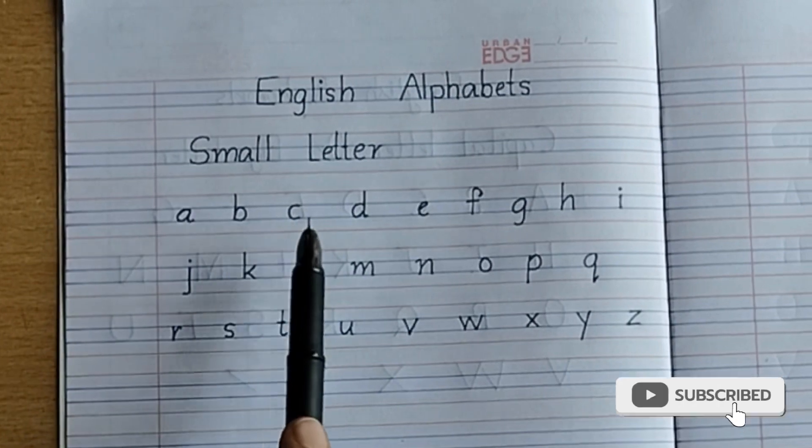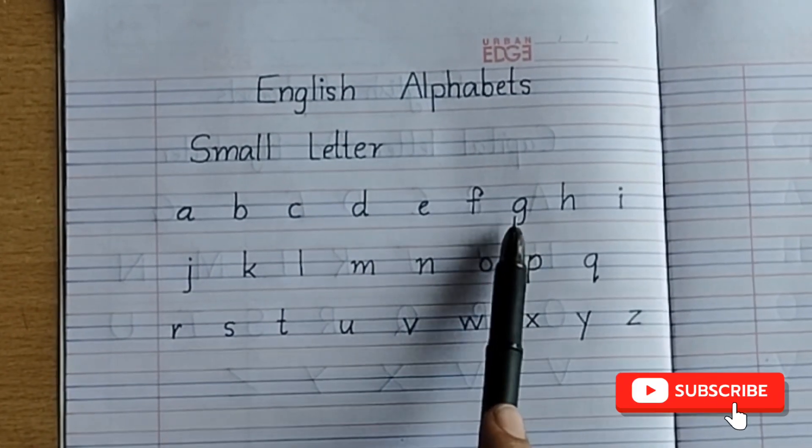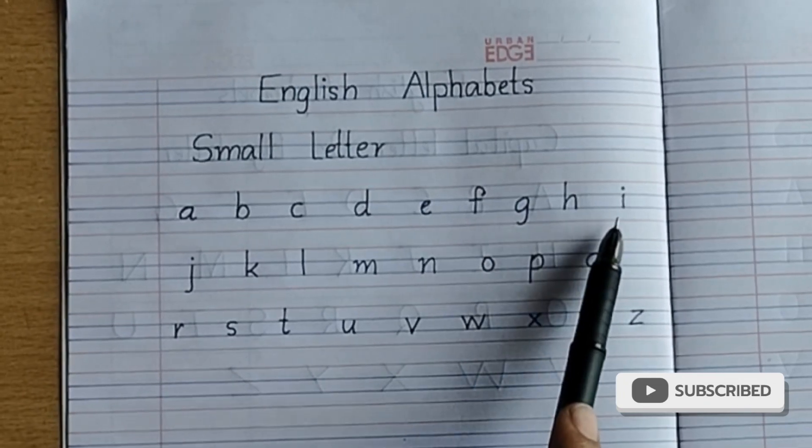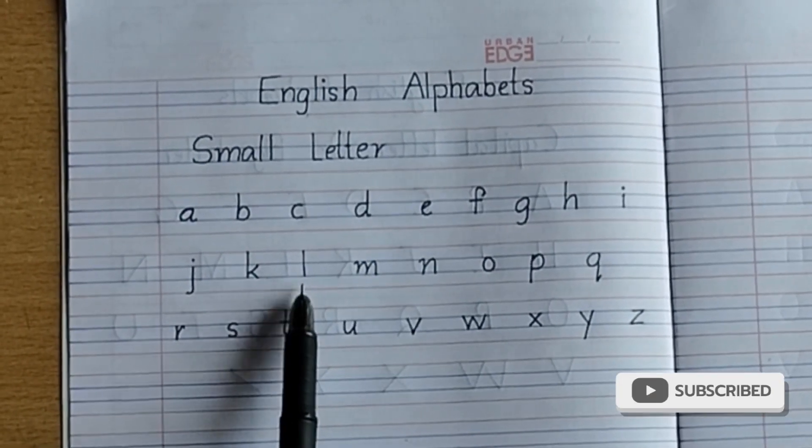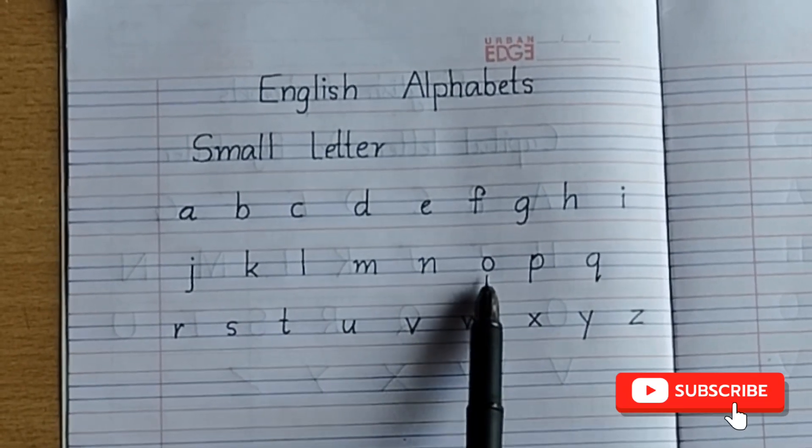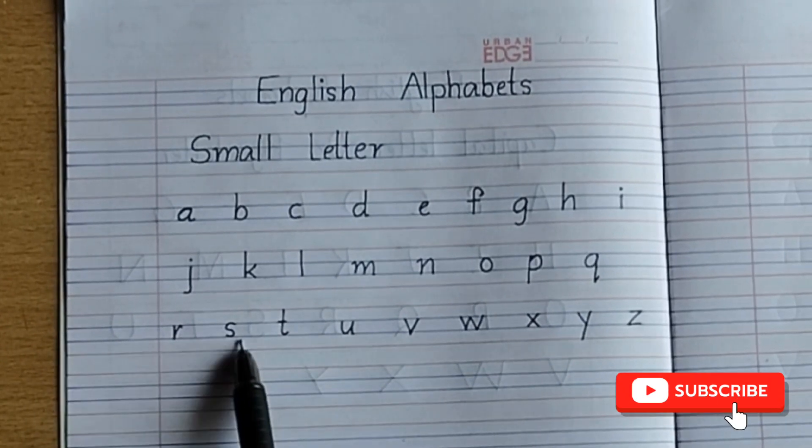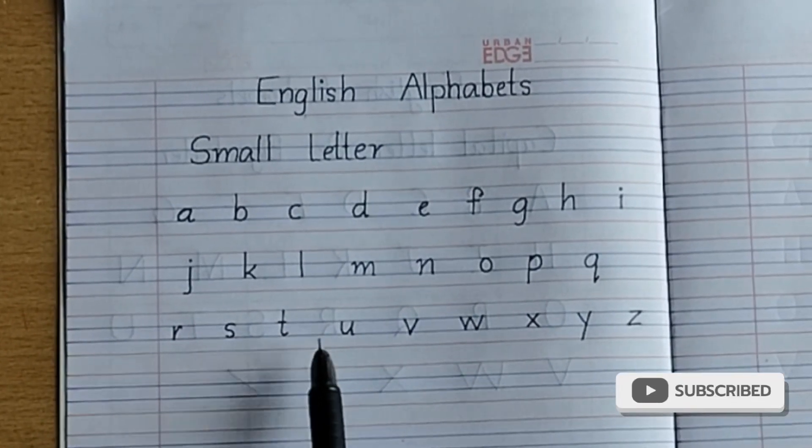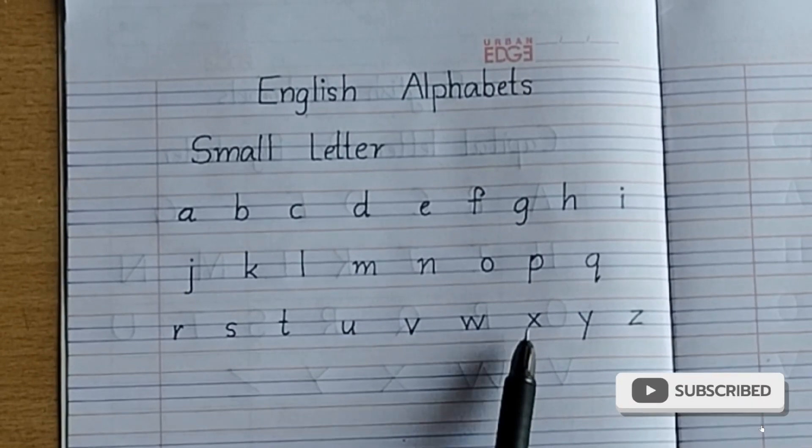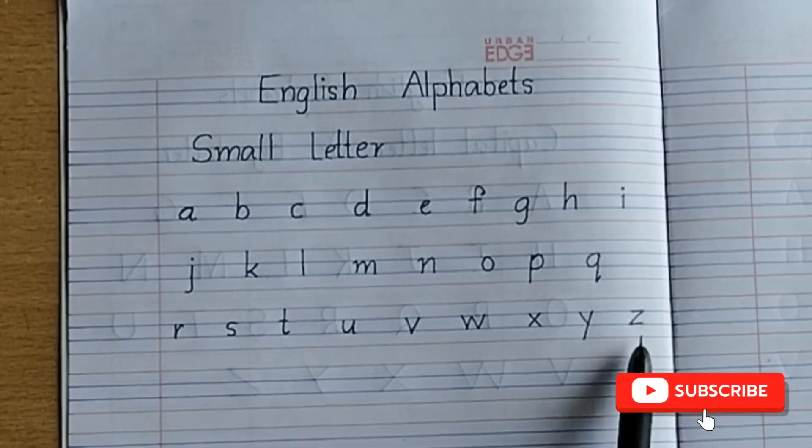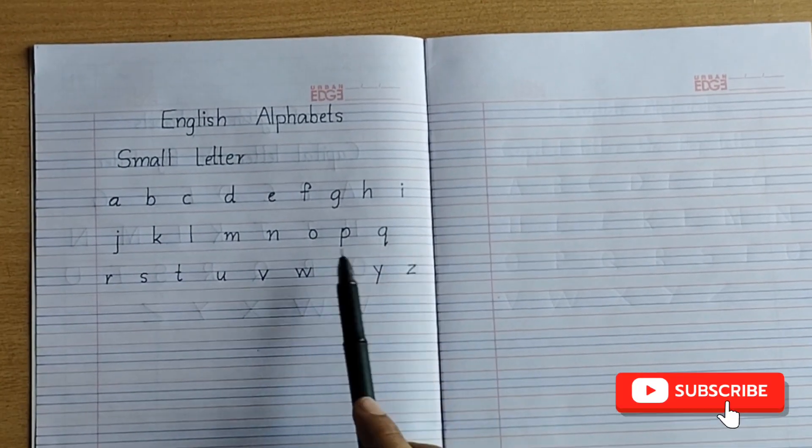Again, small letter English alphabets: A, B, C, D, E, F, G, H, I, J, K, L, M, N, O, P, Q, R, S, T, U, V, W, X, Y, and Z. These are the English alphabets, small letter A to Z.